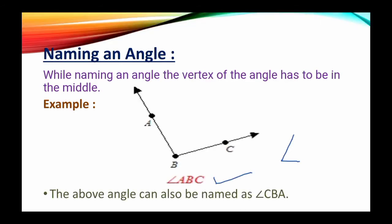Or you can write this one as... The above angle can be written as or named as CBA. We just have to write the vertex in the middle, and you can change the other two letters. That is ABC or CBA.